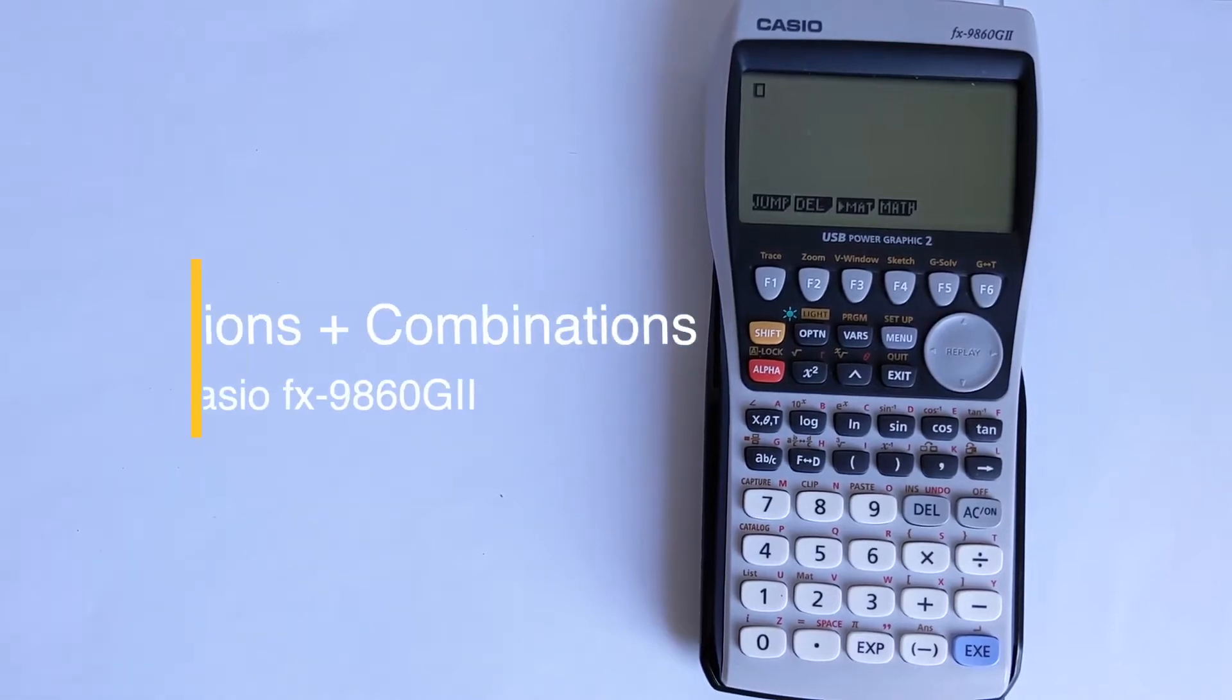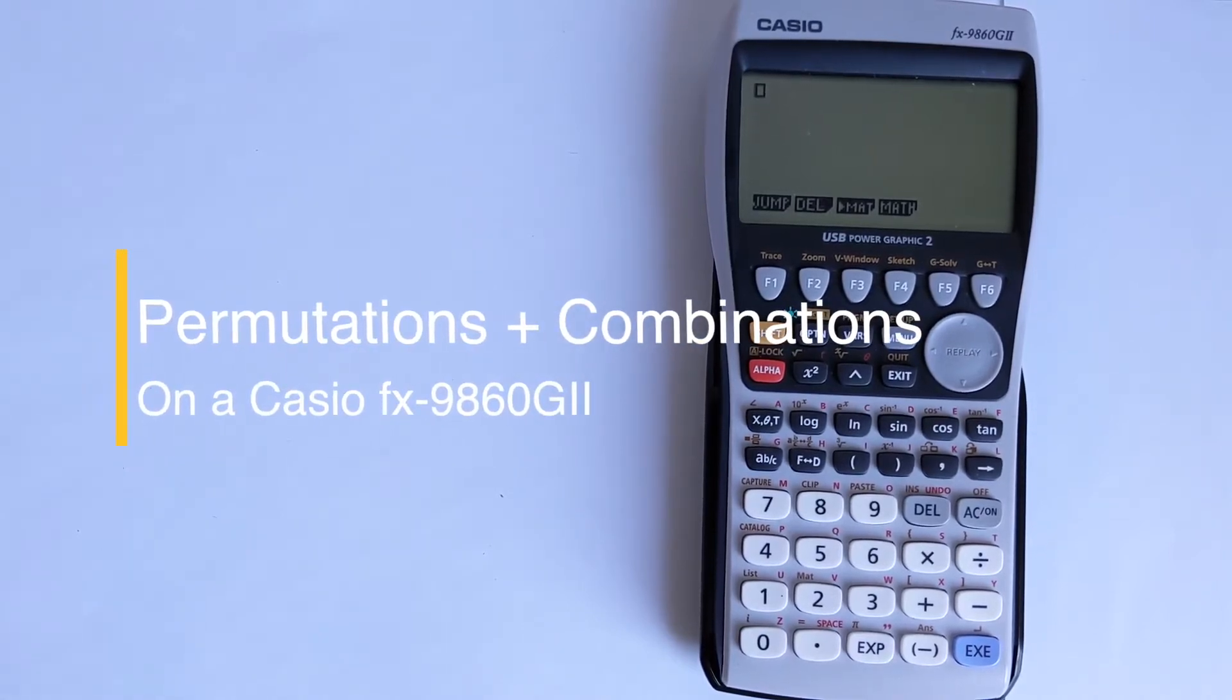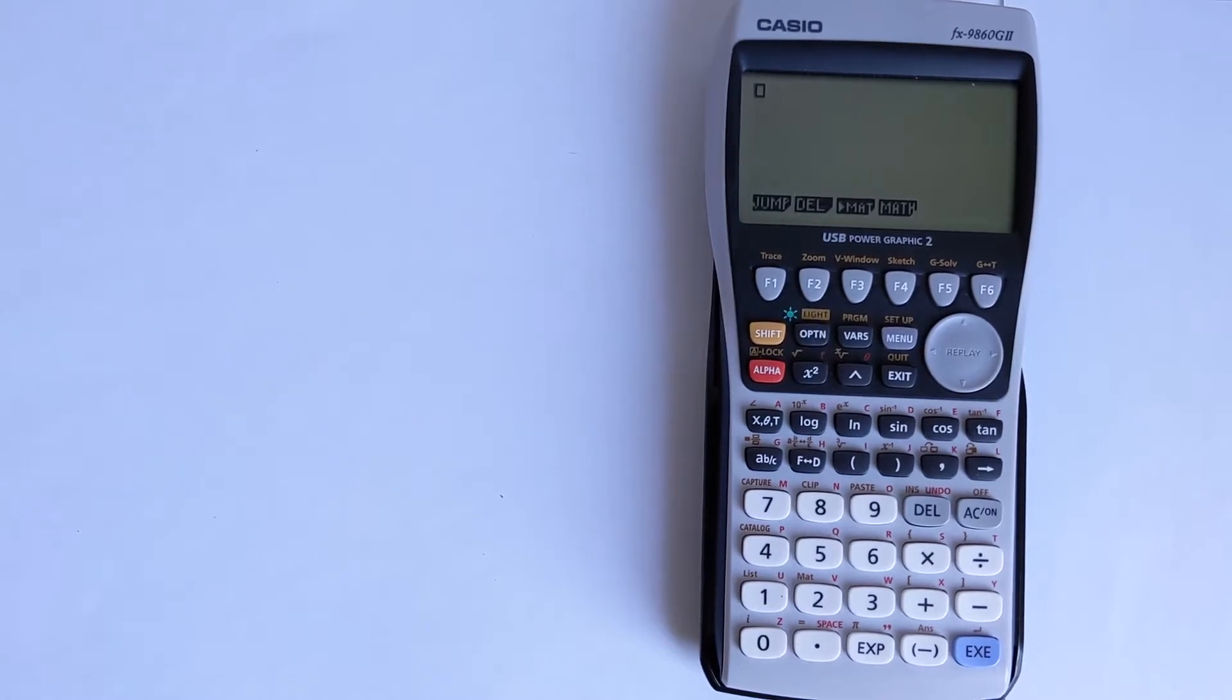In this video I'm going to demonstrate how you can do permutations and combinations on a Casio FX9860G2 graphing calculator. This calculator has built-in functions for computing these. Let's look at two worked examples.